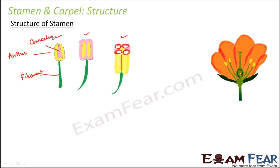The filament is the stalk which bears the anthers — the filament or stalk bears the anthers at its top. The anther is a two-lobed or bilobed structure at the tip of the filament. You can see the two lobes of the anther; the yellow colored structure is the anther.